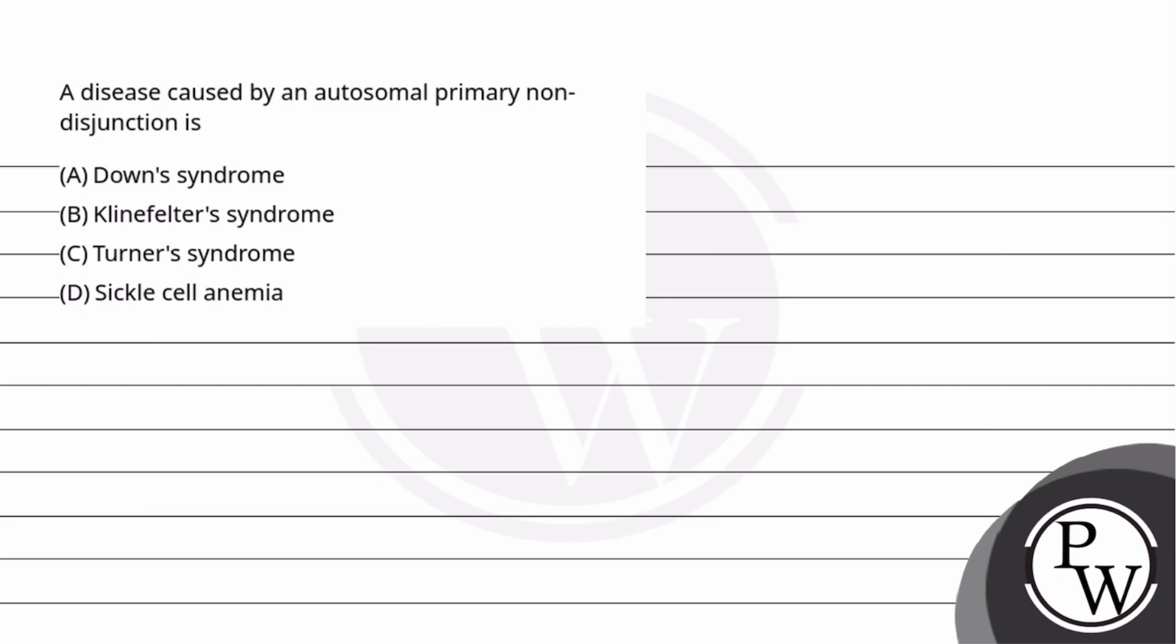We have been asked which disease is autosomal primary non-disjunction. Our key concept here is genetic disorder.